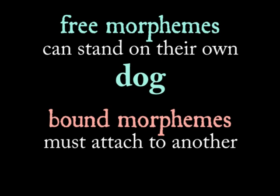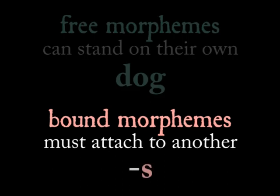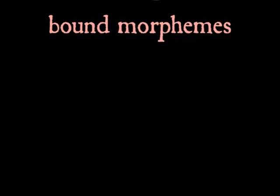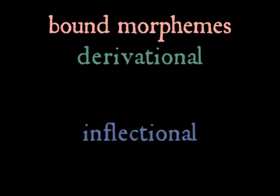Morphemes that do need to be attached to another morpheme are known as bound morphemes. Take the example of plural 's' — do you ever say just 's' on its own to mean plural? Plural 's' always shows up at the end of other morphemes, like in 'dogs', which makes it a bound morpheme. Two types of bound morphemes occur in English and a variety of other languages: derivational morphemes and inflectional morphemes.